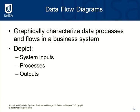Data flow diagrams graphically characterise the processes and flows in a business system. We need to look at the inputs to the system, what processing is involved, and what outputs. We look at the actors or external entities that interact with the system, the use cases or processes involved, what information and data is flowing within the system — whether from an external entity into the system or among different processes — and we show entities, processes, movement of data, flow of information, and data stores.